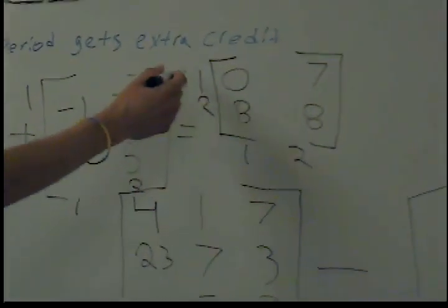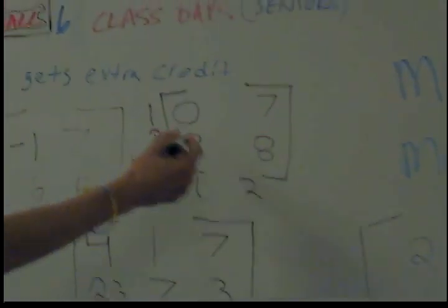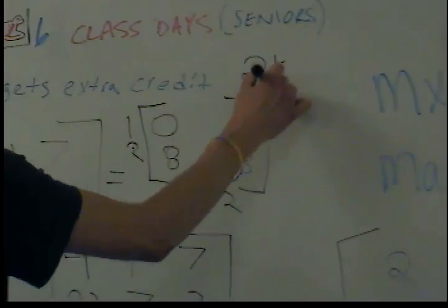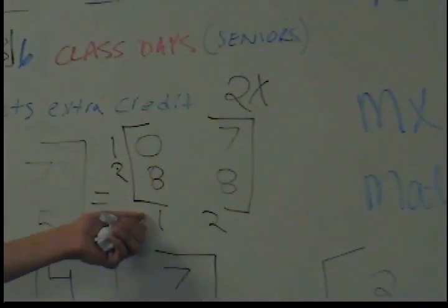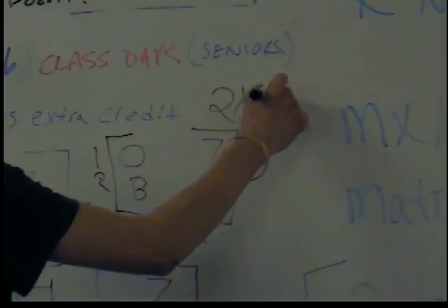And then you have row 1, row 2. Two rows, two columns. Two by two matrix.